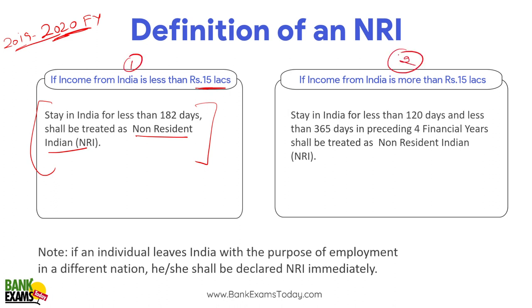The second case: if your income from India is more than 15 lakhs, then to be considered an NRI, you must stay in India for less than 120 days — reduced from the earlier 182-day condition — and an additional condition: stay for less than 365 days in the preceding 4 financial years. Also, if an individual leaves India for the purpose of employment in another nation, they will be declared an NRI immediately.